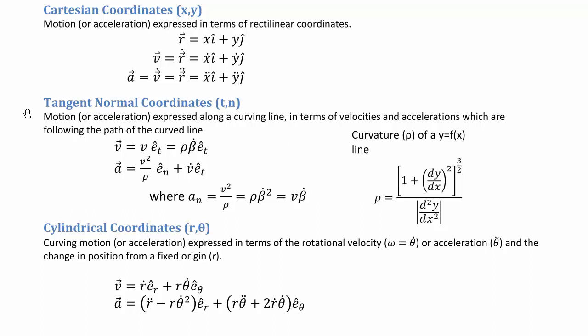Next up, we focus on tangent-normal coordinates, which takes a look at motion or acceleration expressed along a curved line. Instead of our coordinate system never changing in direction, we define the tangent as being in the direction of motion, the normal as perpendicular to the tangent toward the center of curvature, and this coordinate system moves with the particle as it moves.